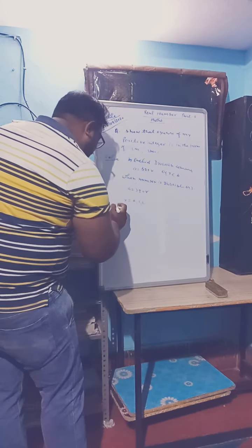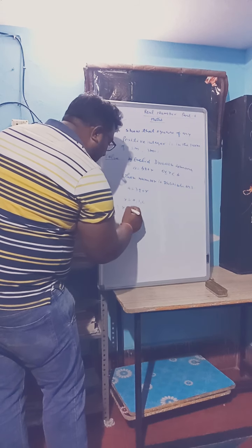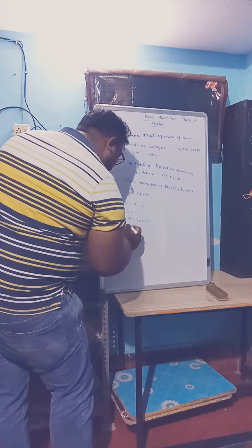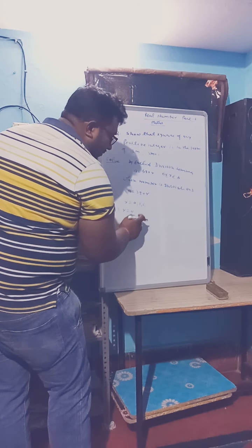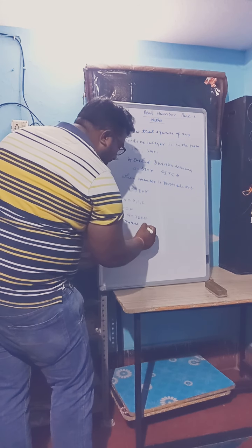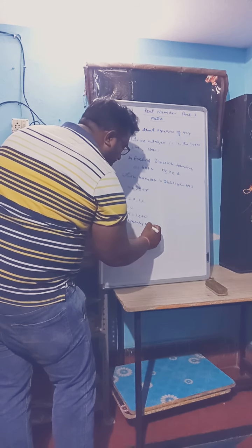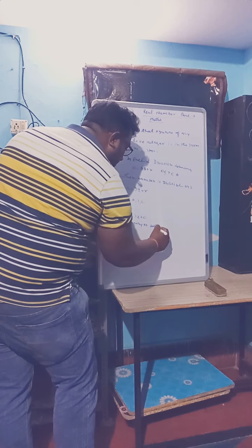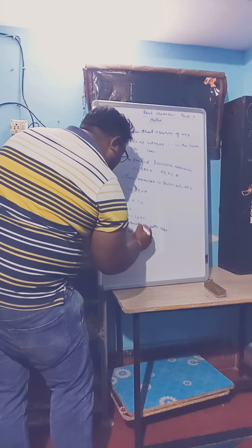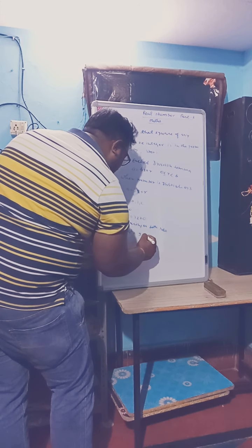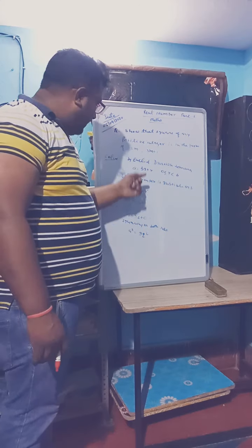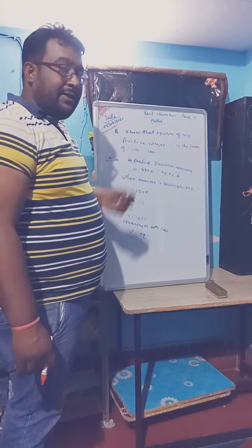Case 1: If R is equal to 0, then A is equal to 3Q plus 0, that is A equals 3Q. Squaring on both sides, we get A squared is equal to 9Q squared, which can be written as 3 times 3Q squared, giving us the form 3m.